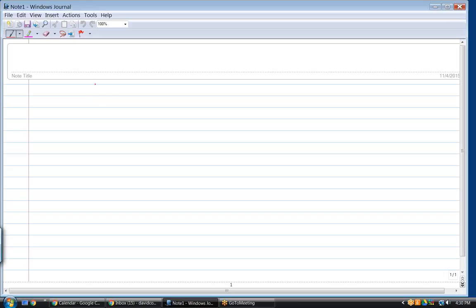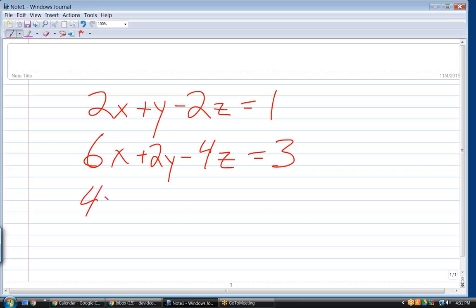Solve these following systems. I just want to go over some solving systems of equations real quick. So, the systems are 2x plus y minus 2z equals 1, 6x plus 2y minus 4z equals 3, and 4x minus 2y plus 3z equals 5.